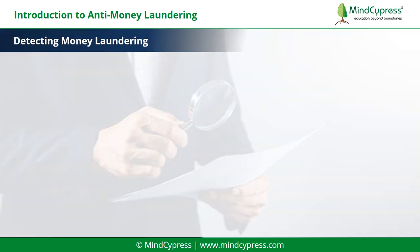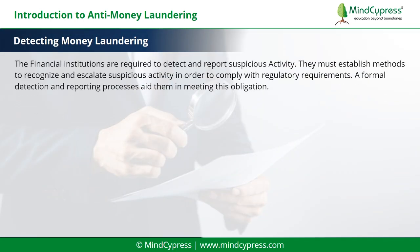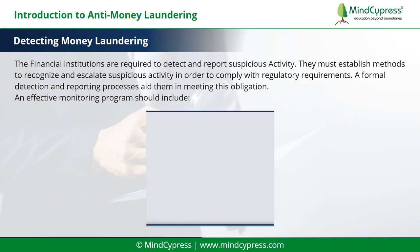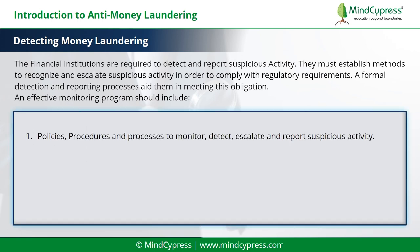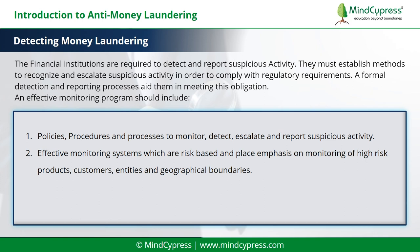Let's understand detecting money laundering. Financial institutions are required to detect and report suspicious activity. They must establish methods to recognize and escalate suspicious activity in order to comply with regulatory requirements. A formal detection and reporting process aids them in meeting this obligation. An effective monitoring program should include: 1. Policies, procedures, and processes to monitor, detect, escalate, and report suspicious activity. 2. Effective monitoring systems which are risk-based and place emphasis on monitoring of high-risk products, customers, entities, and geographical boundaries.